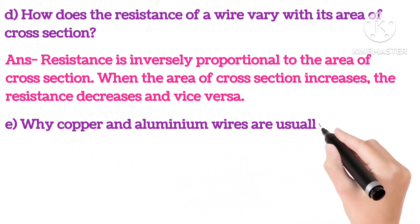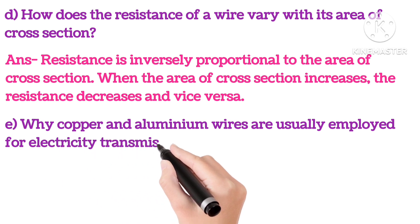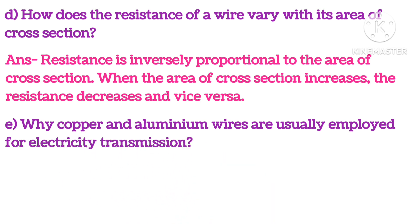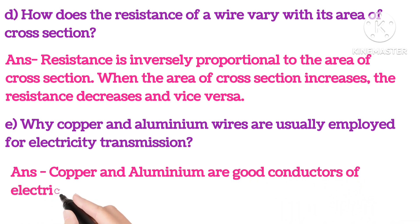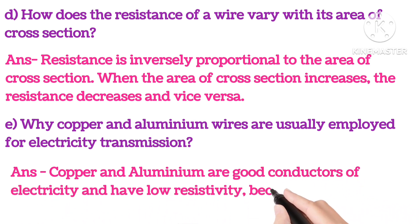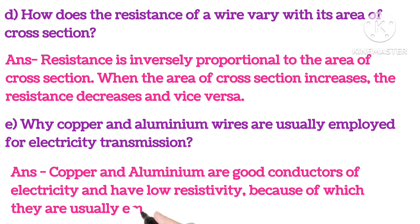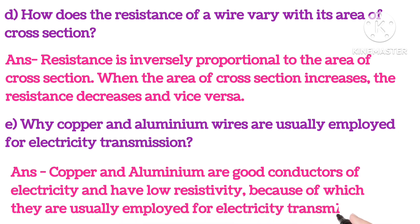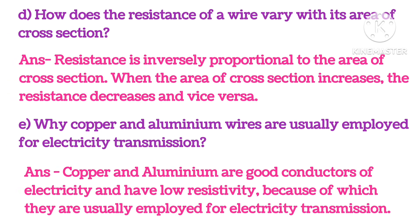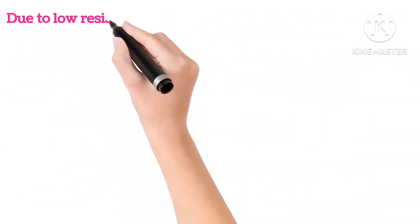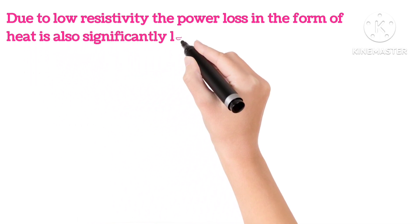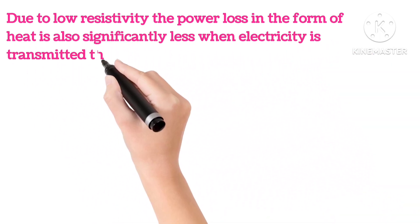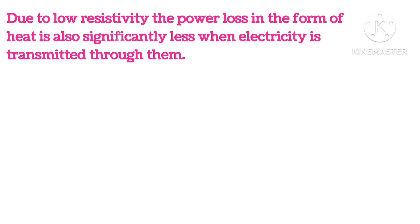E: why are copper and aluminium wires usually employed for electricity transmission? Answer is: copper and aluminium are good conductors of electricity and have low resistivity, because of which they are usually employed for electricity transmission. Due to low resistivity, the power loss in the form of heat is also significantly less when electricity is transmitted through them.